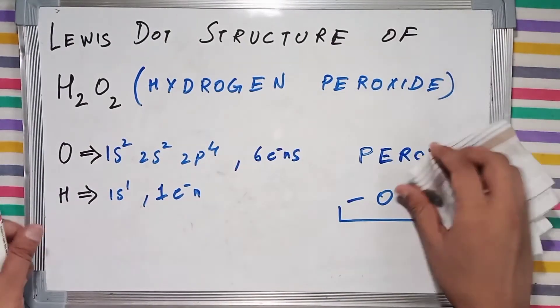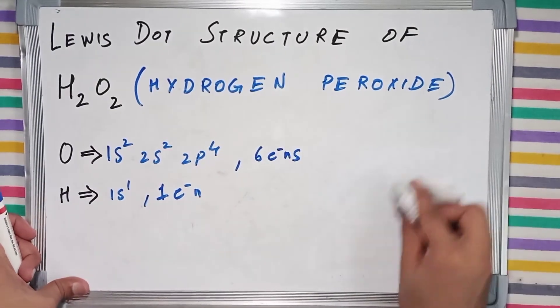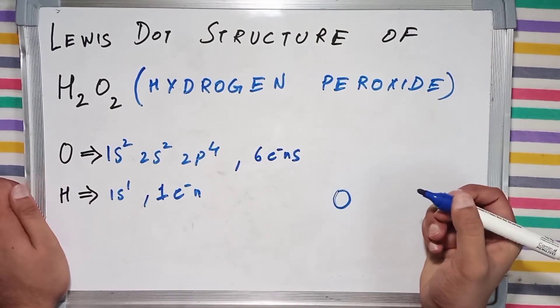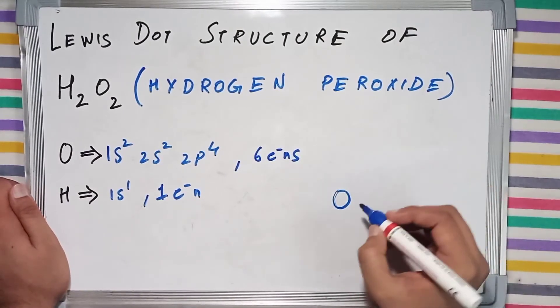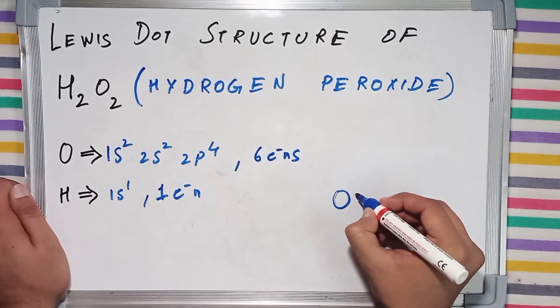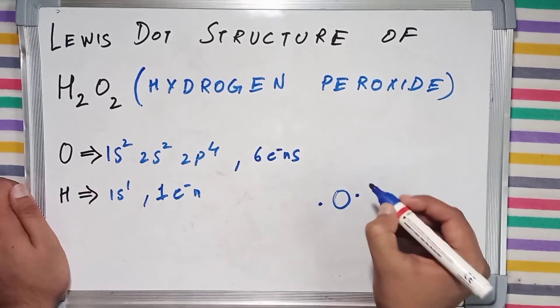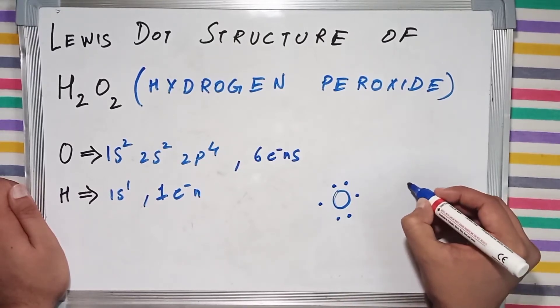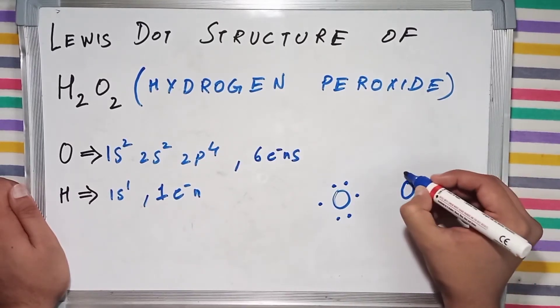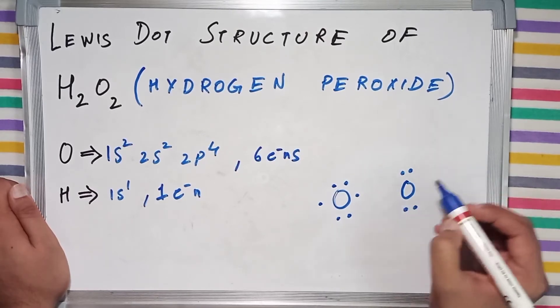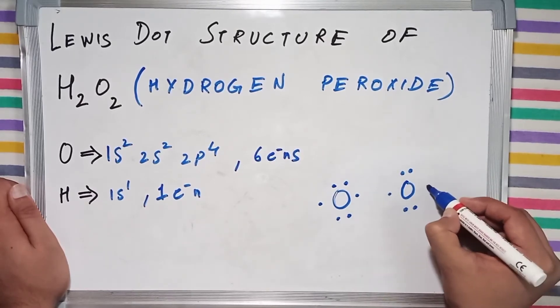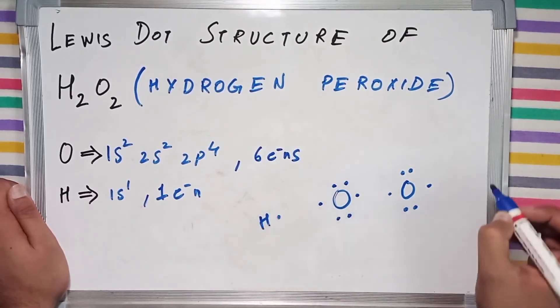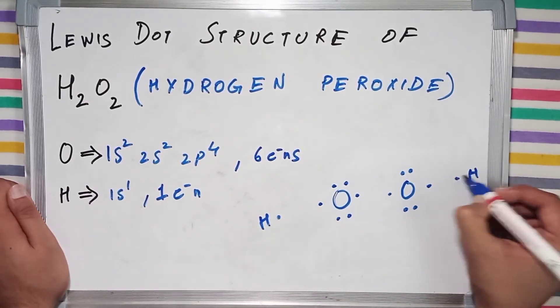Now oxygen has 6 electrons, so 1, 2, 3, 4, 5, 6. One oxygen and another 1, 2, 3, 4, 5, and 6. And hydrogen has a single valence electron.